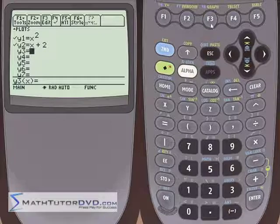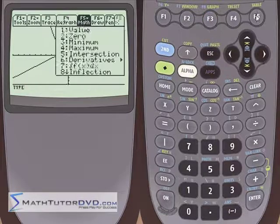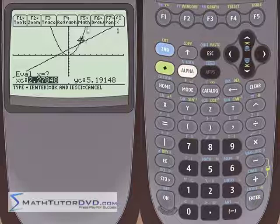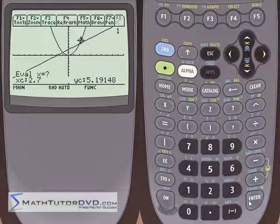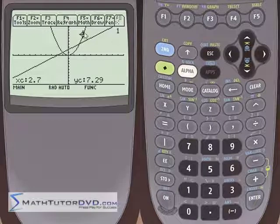This means that this calculation that it did was for y sub 1, the x squared guy. So let's go back to the graph and take a look at that again. Let's go to f5 value, and let's put something in a little bit more. Let's go 2.7. That's a little bit farther over to the right. So it's up here.